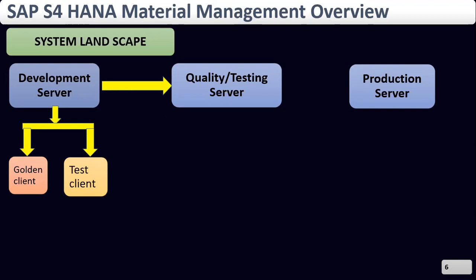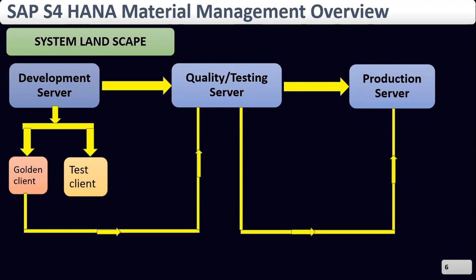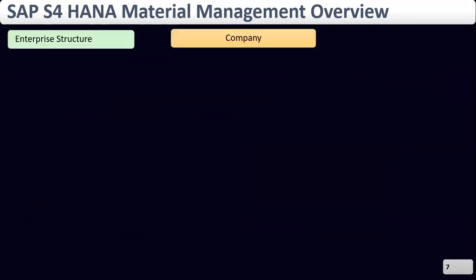Once configuration is done in the development system, it is transferred from development to quality with the help of a basis team. In the quality system, we do quality testing as per the business requirement, testing based on different scenarios. Once quality testing is done, we move the transport request from the quality system to the production system, where business users use the changes.